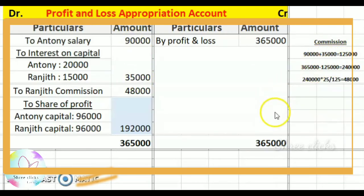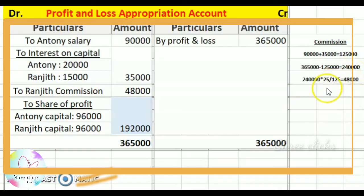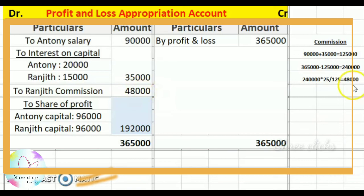Profit is 3,65,000. Subtracting 1,25,000 gives a net profit of 2,40,000. Applying the commission formula: 2,40,000 into 25 divided by 125 equals 48,000. So Ranjit's commission is 48,000.